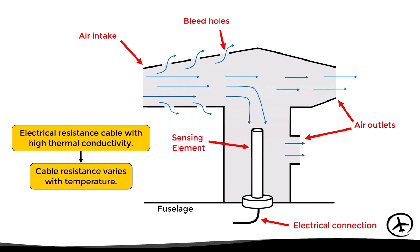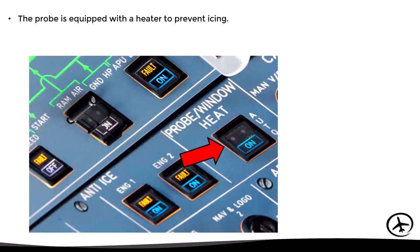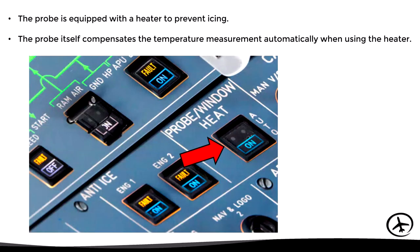Since this probe protrudes from the fuselage, it is susceptible to ice formation. That's why it is equipped with a heater to prevent icing. The probe itself compensates the temperature measurement automatically when using the heater, with a margin of error of one-tenth of a degree Celsius.